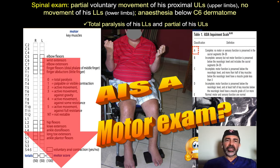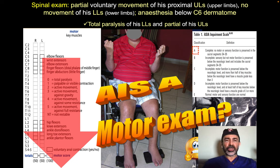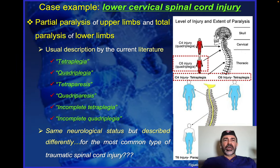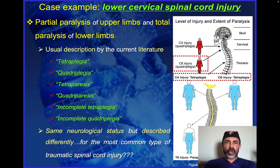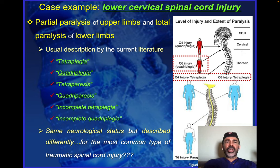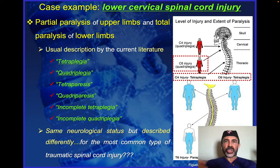Back to that case — his ASIA Impairment Scale was AIS A. What about his motor exam? That is the second part of this lecture, which is very important to understand. When we talk about injury to the lower part of the cervical spinal cord, which is the most common effect especially after accidents, we find several different ways to describe the same neurological status.